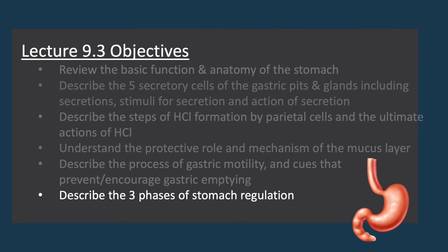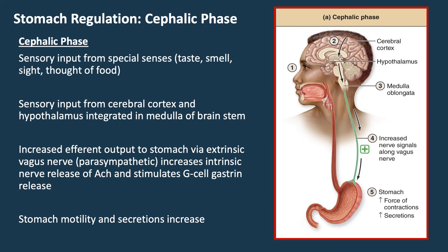The basal electrical rhythm of the stomach and resulting contractions can be altered by both nervous reflexes and hormones. There are three phases related to stomach regulation. First, the cephalic phase — cephalic meaning head — triggered by the thought, smell, sight, or taste of food, things we do with our head. Nerve signals from higher brain regions are sent to the hypothalamus, relayed to the medulla oblongata, which increases parasympathetic stimulation to the stomach via the vagus nerve, causing an increase in both contractile force and secretory activity of the gastric glands.